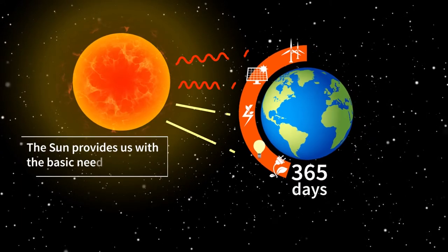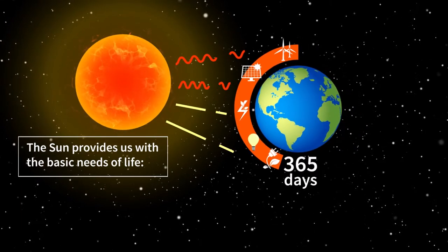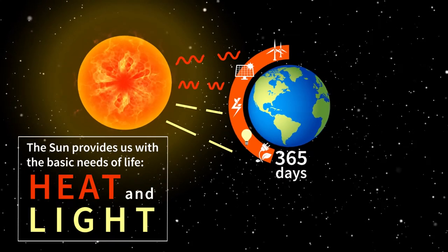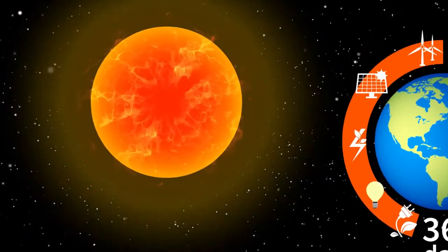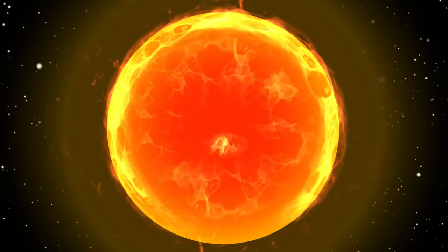The sun provides us with the basic needs of life: heat and light. In reality, the sun is made up of hydrogen.